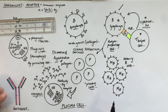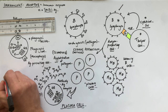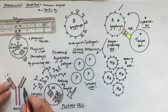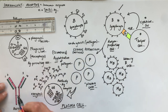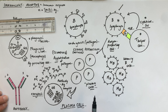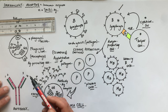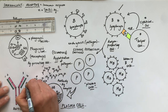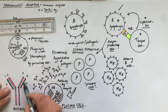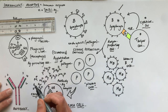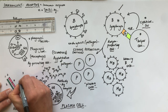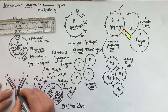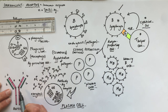The antibody itself is made of four polypeptide chains — two in pink and two in green — making it a quaternary protein. The two green chains are called the light chains because they're shorter, and the two pink chains are called the heavy chains because they are longer. So there are two heavy chains and two light chains.